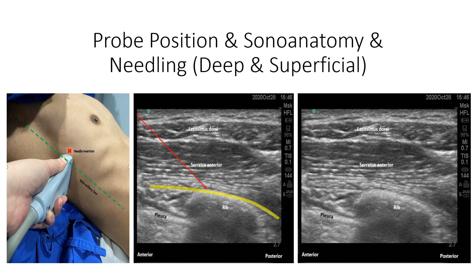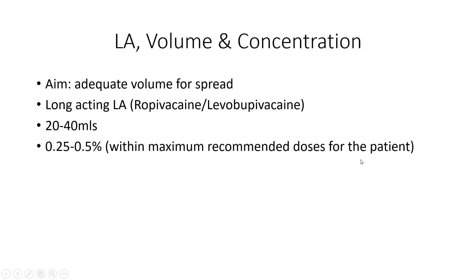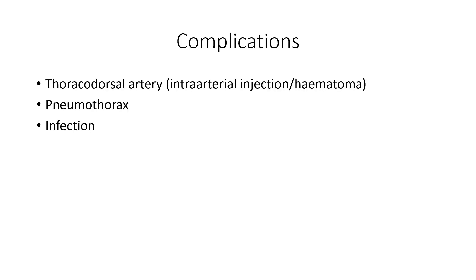We can also place our LA superficially, meaning we aim the needle superficial to the serratus anterior muscle and deposit our LA there. Since this is a fascial plane block, we aim for adequate volume — volume plays the bigger role here. At least 20 to 40 ml is indicated for this block. We would prefer a long-acting local anesthetic so it can last at least a day. For concentration, we calculate the maximum recommended dose for the patient first, then determine how much volume the patient can accept.